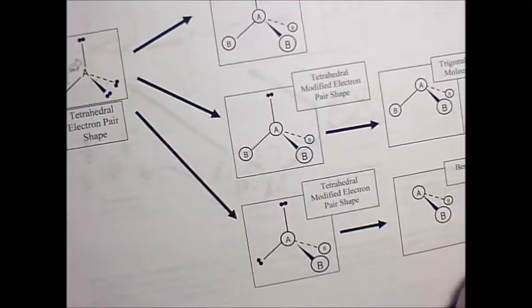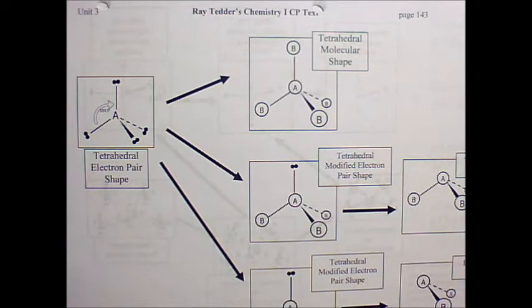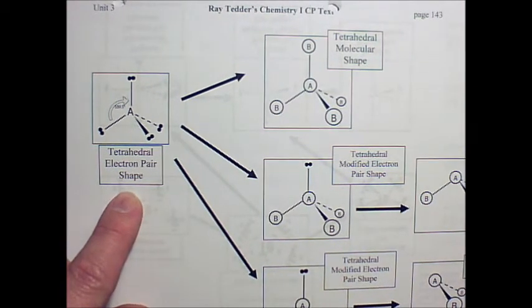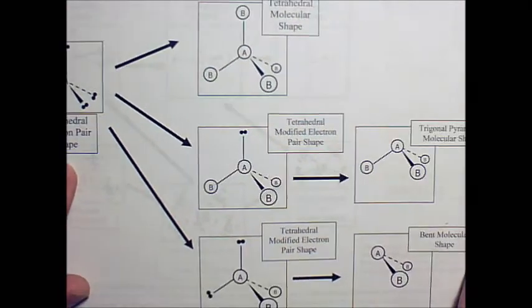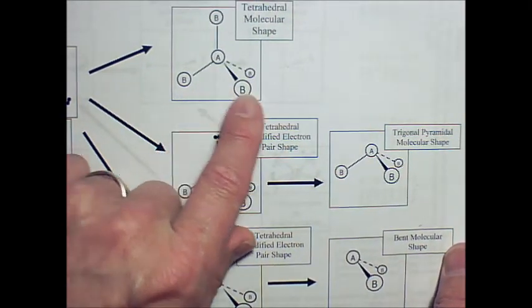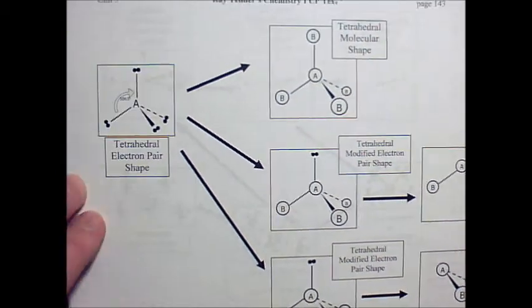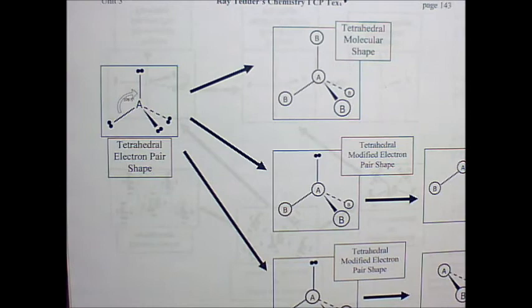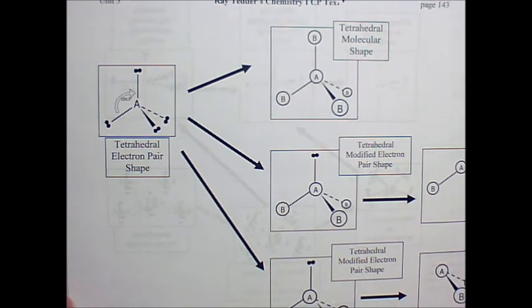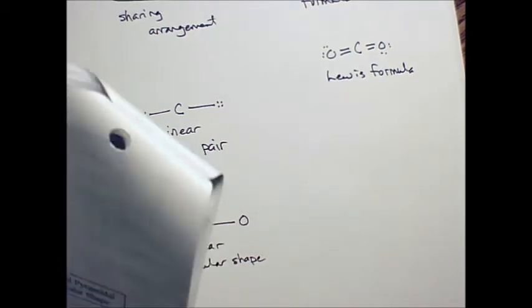We go to page 143, and this is all the stuff we spent our time on yesterday, doing the, starting with a tetrahedral electron pair shape. And by doing this process, you get tetrahedral molecular shapes, trigonal pyramidal, bent molecular shapes. You get all these different kind of shapes, starting with an electron arrangement like this. And then page 140. Oh, wait a minute. I don't have another page on this because in CP, I just cut that out. That's as far as we need to go with CP, all right?